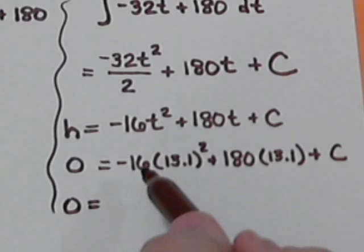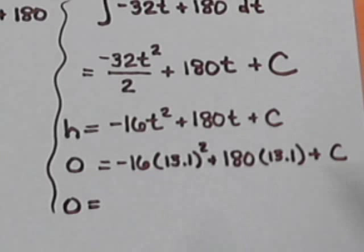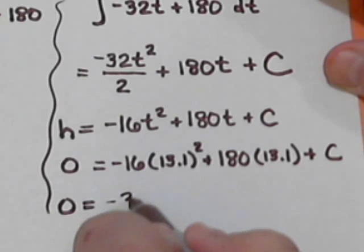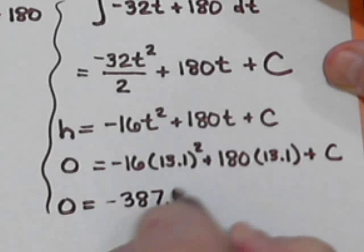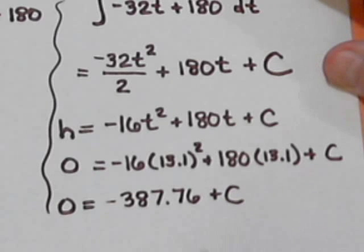So if we put in negative 16 times 13.1 squared plus 180 times 13.1, all that calculates out to be negative 387.76 plus the C. And then simply to get the C, we move that over to the left-hand side.